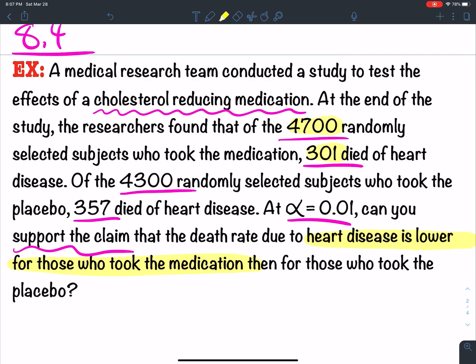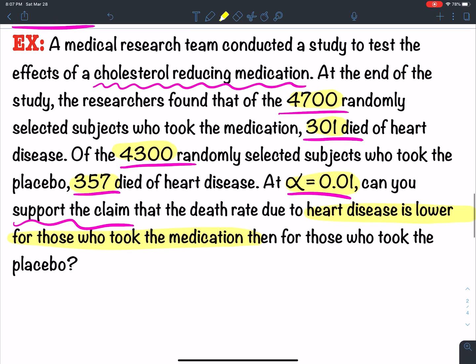Here are the important numbers for us. So we're going to take this information. What we're doing, we're comparing two proportions. A proportion from one population, a population who took the drug, versus a proportion of another population who did not take the drug but took a placebo. Both are random samples. They're independent of each other.